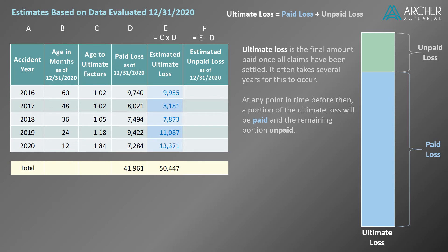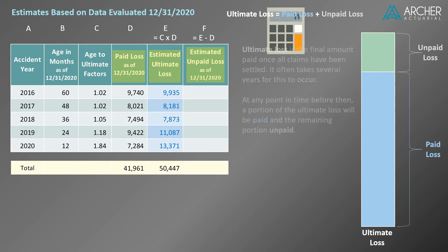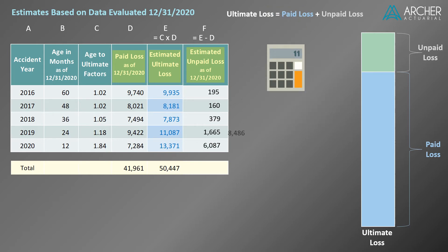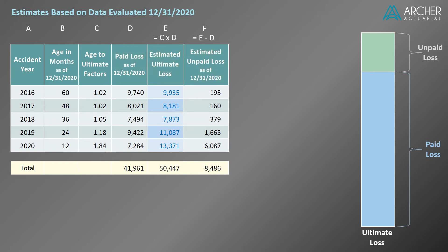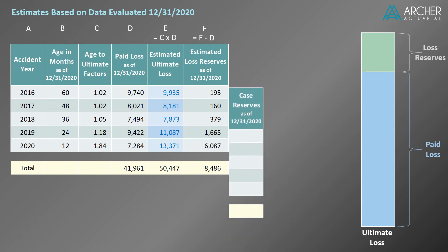It often takes several years for this to occur. At any point in time before then, a portion of the ultimate loss will be paid and the remaining portion unpaid. In our example, we can calculate the estimated unpaid losses as of 12/31/2020 by taking the difference between our estimated ultimate loss and the paid loss as of 12/31/2020. This terminology for paid and unpaid loss makes things simple, but the more common term for unpaid loss is loss reserves. Let's change our titles accordingly.